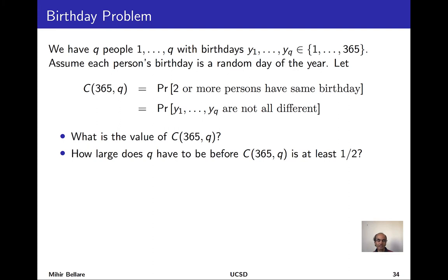Sometimes it's called the birthday paradox because for some people without a good grounding in probability theory, it may seem counterintuitive. The name comes from the following setting: you have some number Q of people with birthdays, denoted Y1 through YQ, each birthday being a day of the year, 1 through 365. We'll assume that people are born on random days, so Y1 through YQ are randomly and independently distributed in the 1 through 365 range. We're interested in whether two or more persons have the same birthday — the collision probability for picking Q items at random from a set of 365 items.